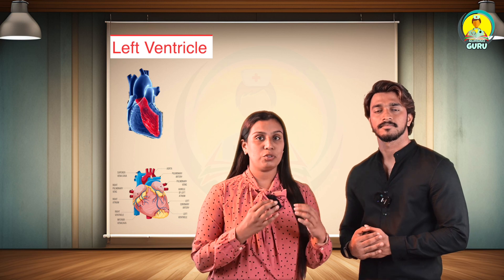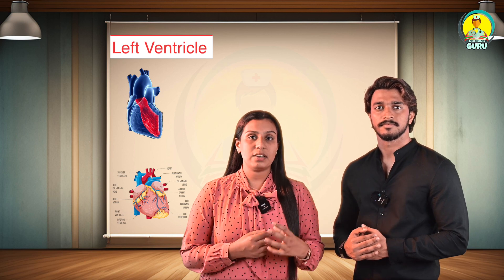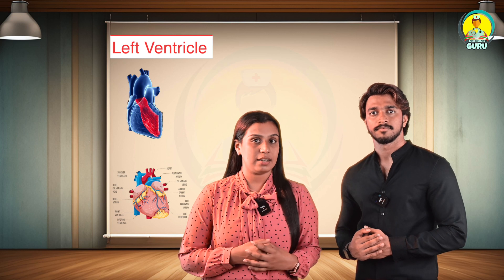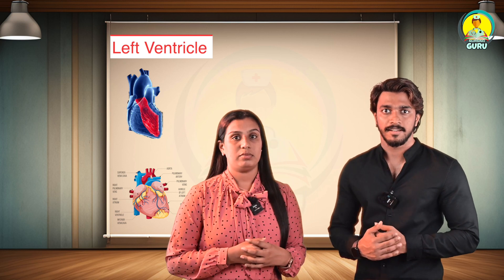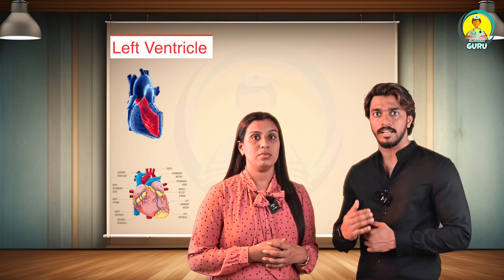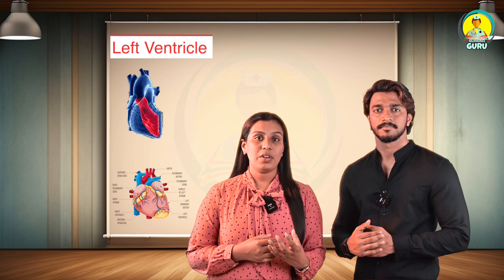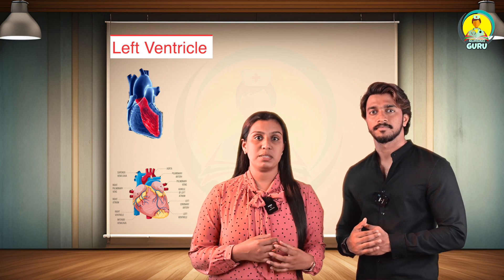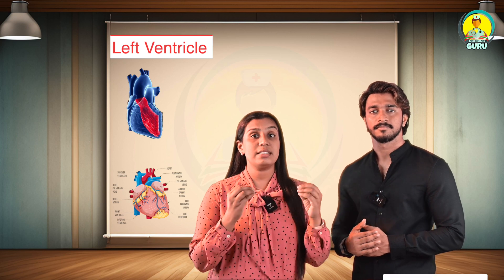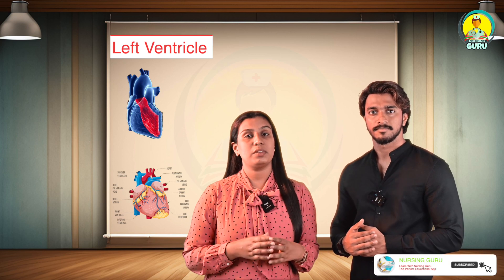The left atrium forms the greater part of the base or posterior surface of the heart and part of the left border. The left ventricle forms the apex, sternocostal surface, and the left two-thirds of the diaphragmatic surface. The walls of the left ventricle are three times thicker than the right ventricle. The mitral valve guards the AV orifice and consists of two cusps — one anterior and one posterior — having a similar structure to the cusps of the tricuspid valve.